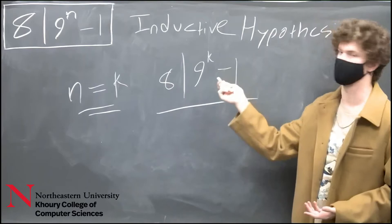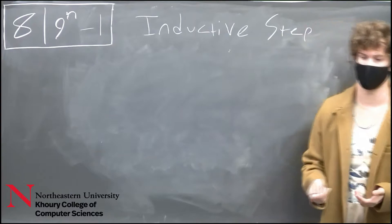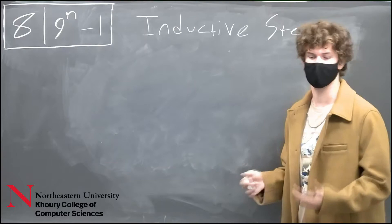We assume that 9 to the k minus 1 is divisible by 8 in all cases. Our last step in this proof is our inductive step. Our inductive step is going to claim that our equation holds true for any n equals k plus 1. Assuming our hypothesis is true,